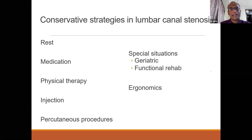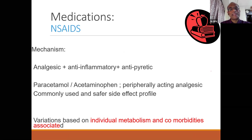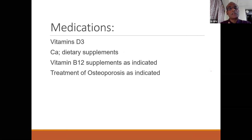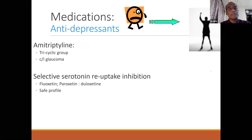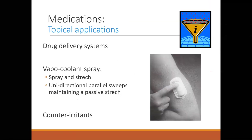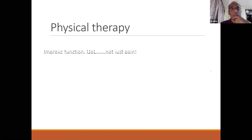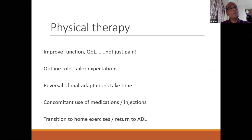Conservative management options: NSAIDs are not ideal given the comorbidities in this population. Paracetamol/acetaminophen has the safest profile. Improve vitamin D, calcium, and B12; treat osteoporosis. Neuromodulators like gabapentin and pregabalin, amitriptyline, fluoxetine, and duloxetine can be used — but duloxetine can cause urinary retention, especially in those with prostatic issues. Prefer localized drug delivery over oral where possible. Use physical therapy with the aim of returning to activities of daily living, not running marathons.